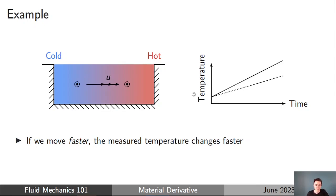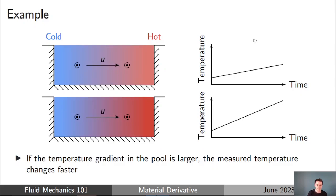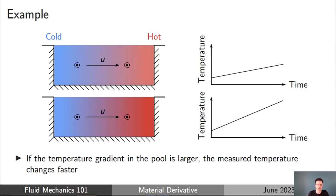If we move the sensor faster — really move it quickly through the pool — the temperature measured will change more rapidly, as you can see in the curve. And in a similar thought exercise: if we had two pools, one with a moderate cold-to-hot gradient and another with a much steeper temperature gradient, moving the sensor at the same speed through both pools, the pool with the steeper gradient will see a more rapid change in temperature. These are the key ideas.